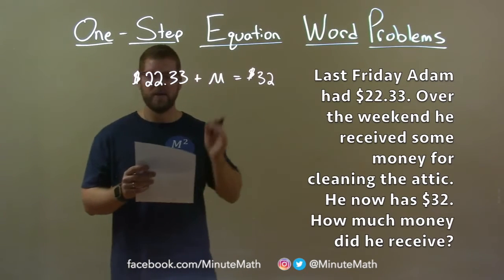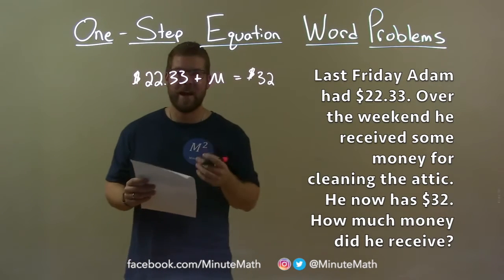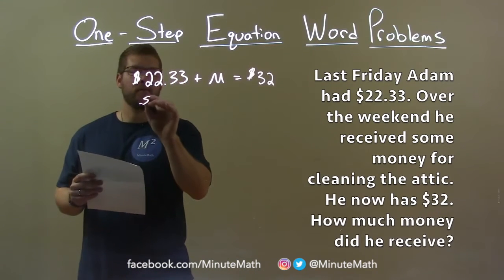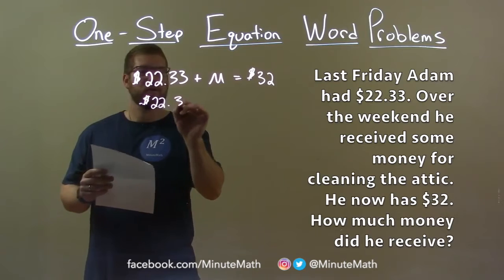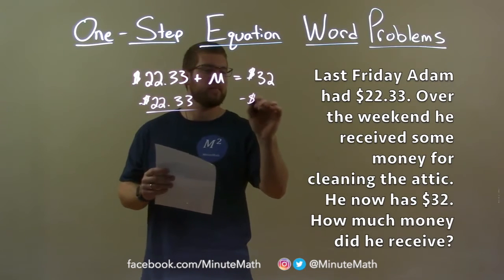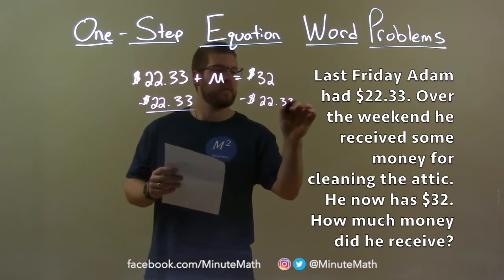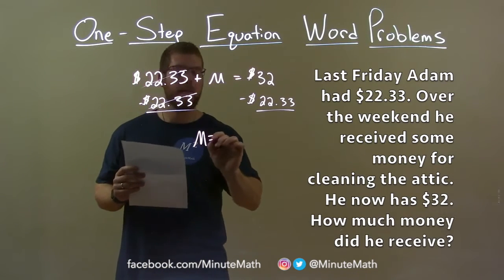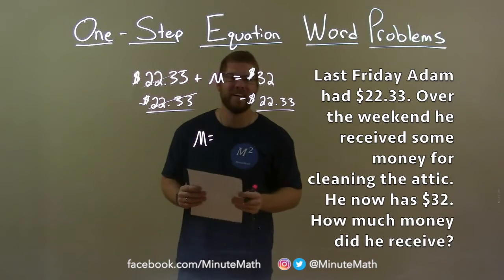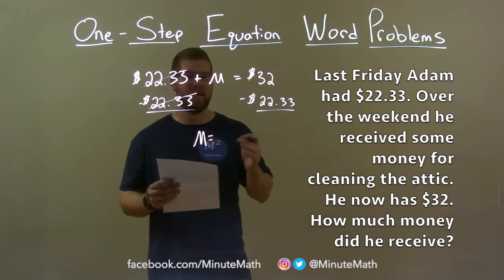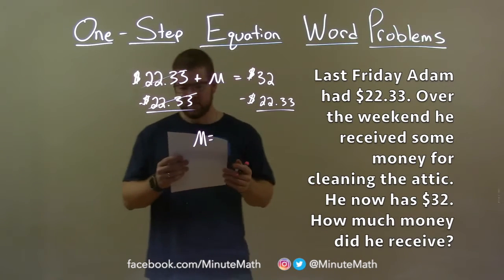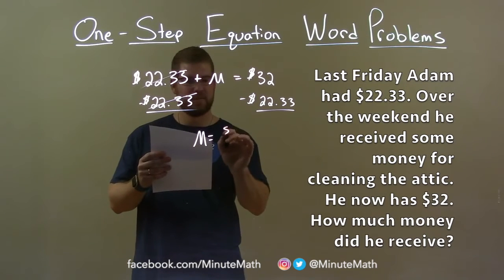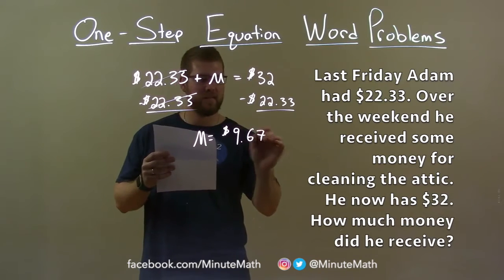We want to solve for M — the amount of money he received over the weekend. The opposite of addition is subtraction, so subtract $22.33 from both sides. This gives M by itself. $32 minus $22.33 is $9.67.